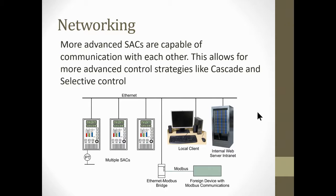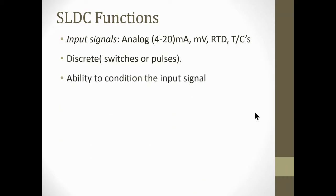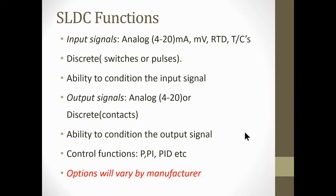The function: input signals analog will take a 4-20 milliamp signal, millivolt. We can also tie in an RTD or thermocouples, discrete, those are pulses or switches, on-off, zeros and ones. Then the ability to condition the input signal. Output signals: analog 4-20 or discrete contacts, and we also have the ability to condition the output signal. Control functions: proportional, proportional-integral, and PID proportional-integral-derivative. We have those functions on the standalone controllers. Obviously, every manufacturer will have different options here. We've got the Yokogawa, so that's what you'll be using in the labs.